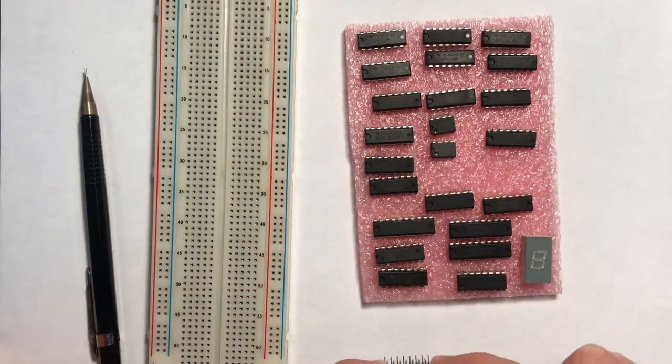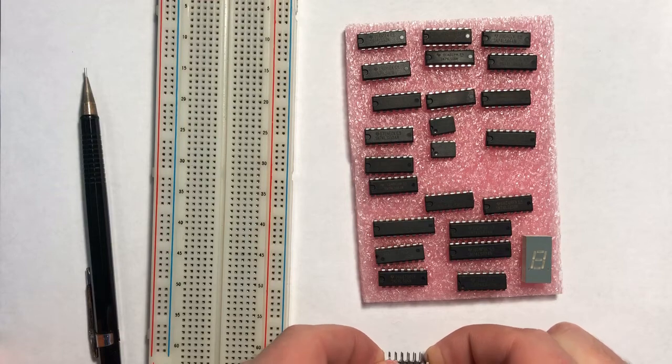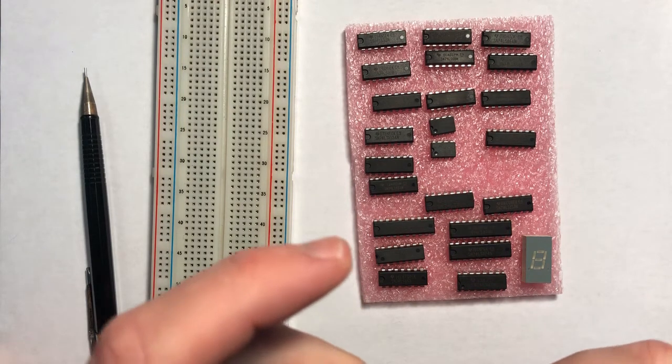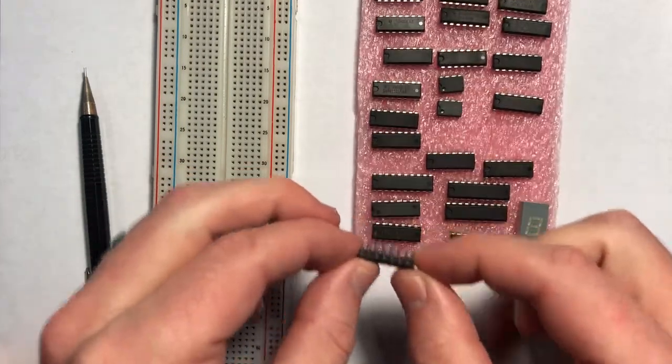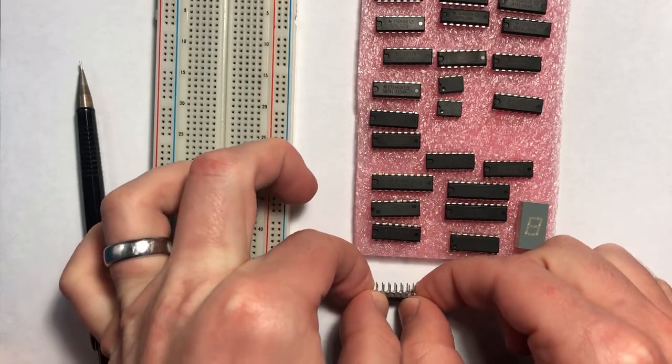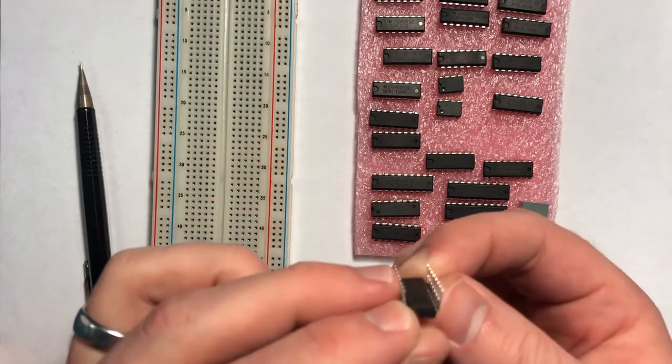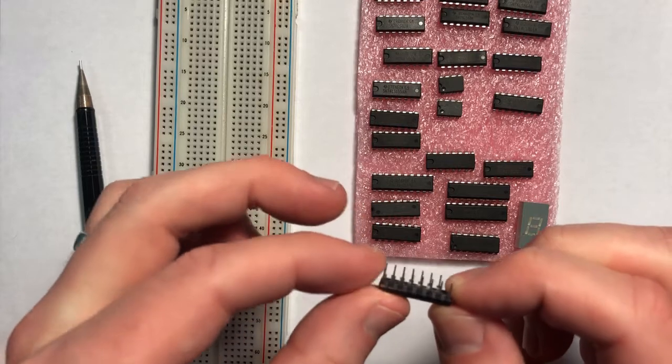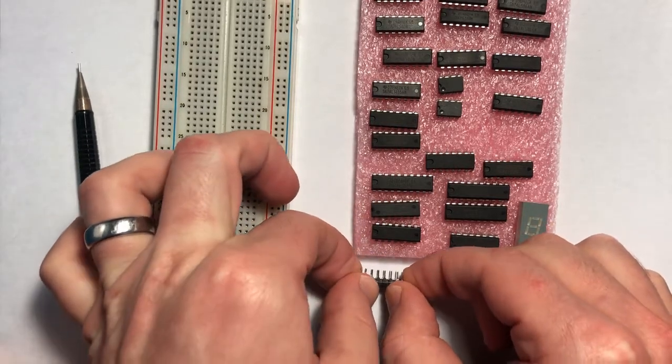The best way to do that is grab the IC by both ends and use a table or some other flat surface and just gently roll the IC to straighten the legs out. Of course, we're going to have to do that to each side, so just reassess after you do it each time.